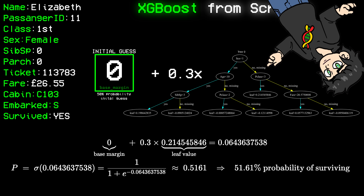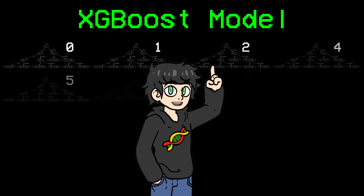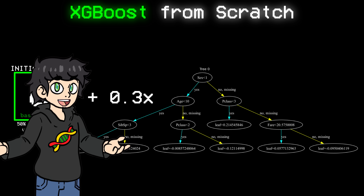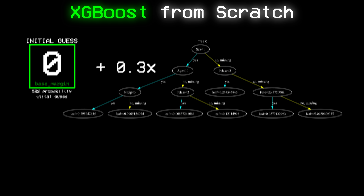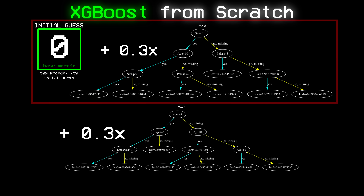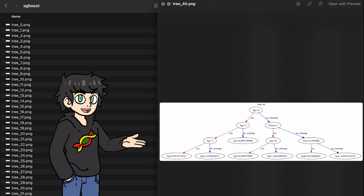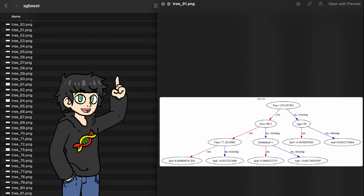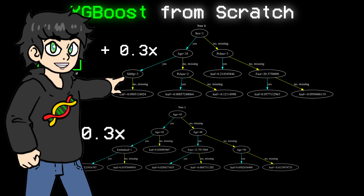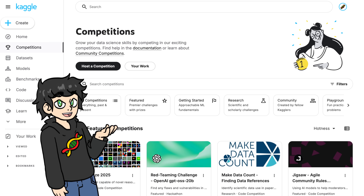With only one tree, we only give a small nudge in the right direction, but it's not enough. So we train more trees — the next tree takes into account the predictions of all the previous trees, learning from their mistakes. This is the beauty of gradient boosting. If you do this, say, 100 times, you get a pretty good model. It's actually so good that a lot of people win Kaggle competitions by just using XGBoost.